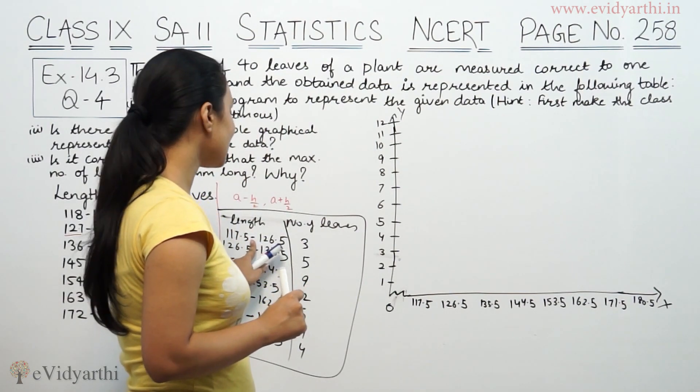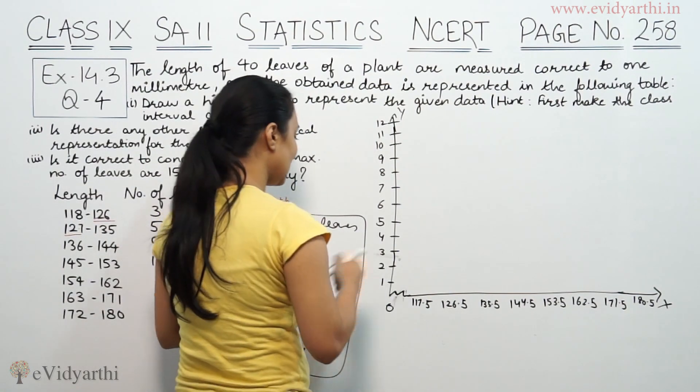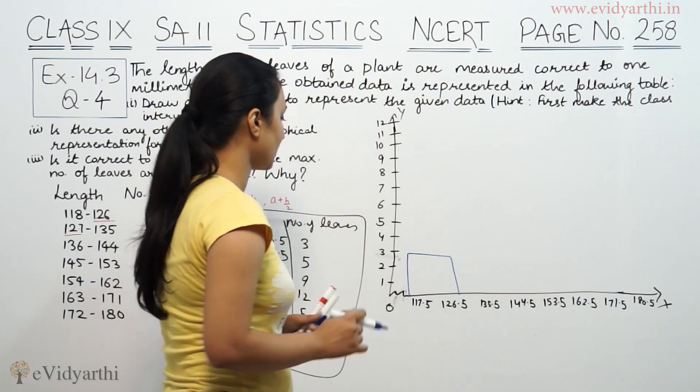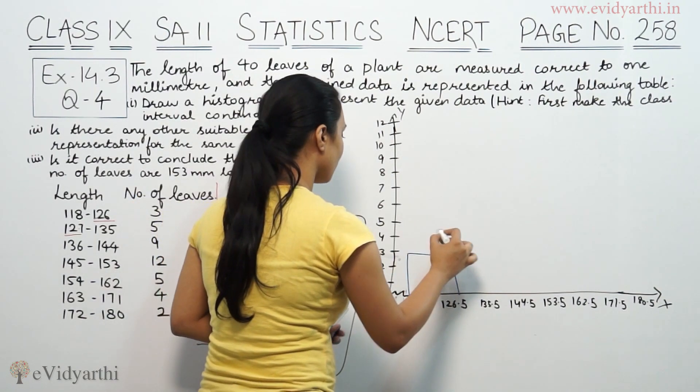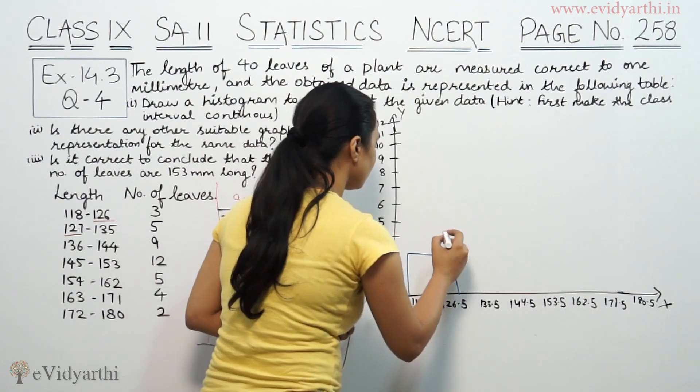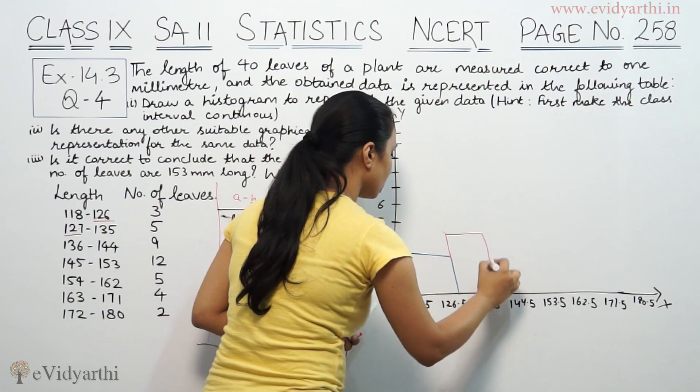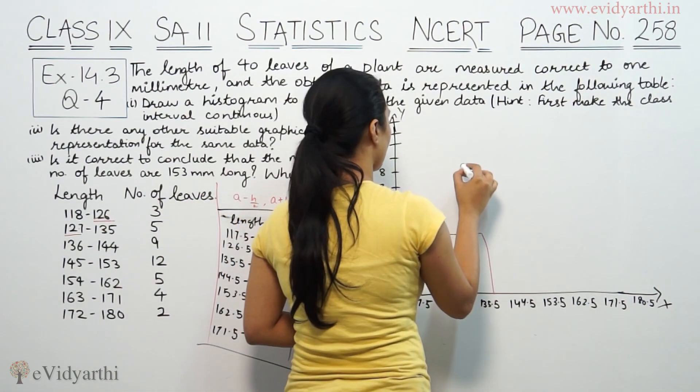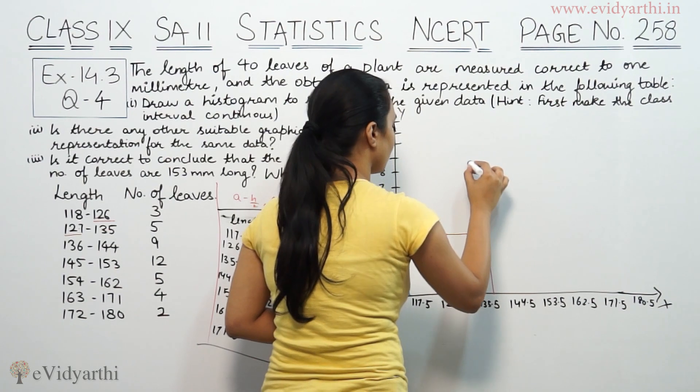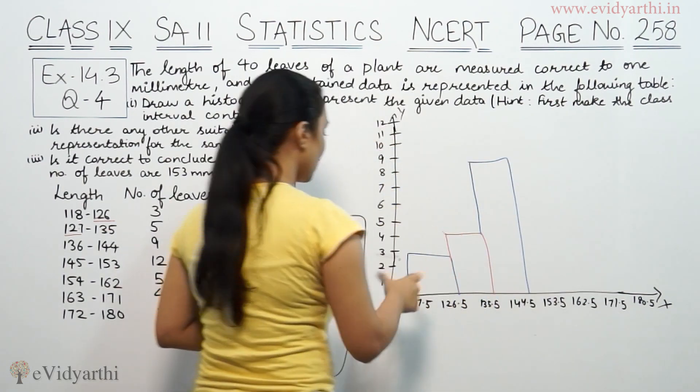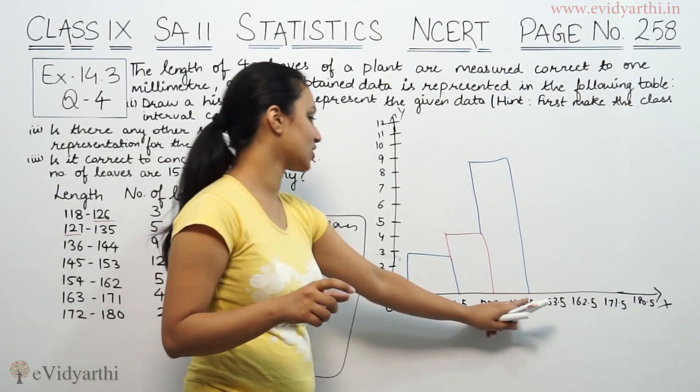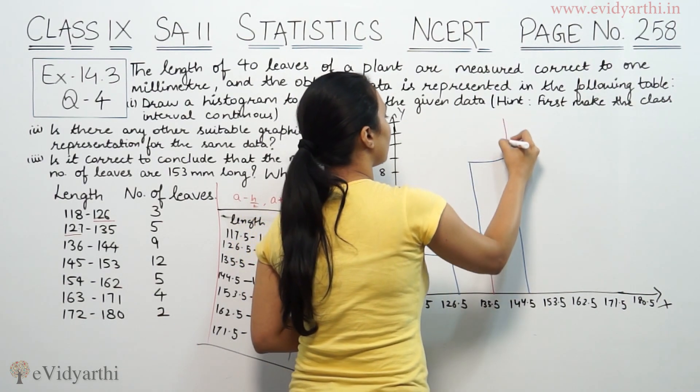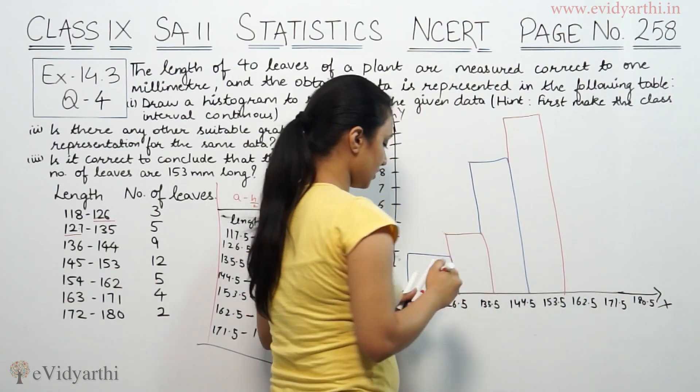First is 117.5 to 126.5, with frequency 3. Then 126.5 to 135.5 with frequency 5. Then next is 9 for 135.5 to 144.5. Then 12 for the next interval. Then 5, then 4, then 2.